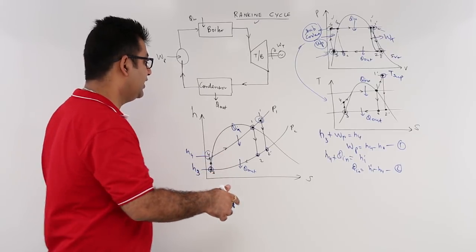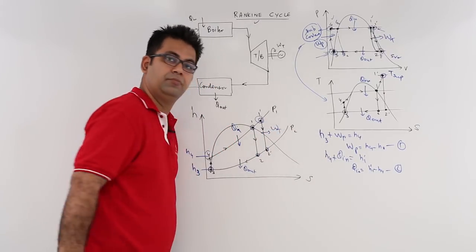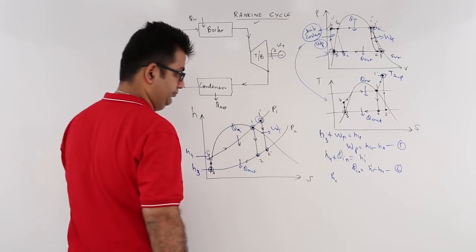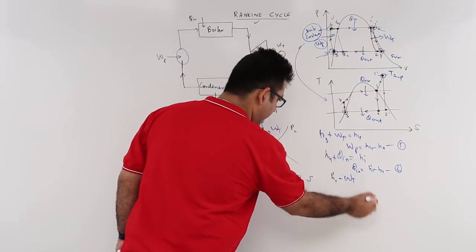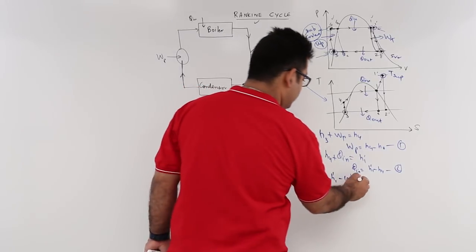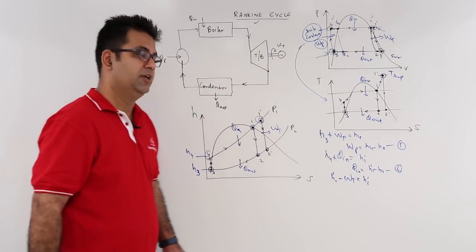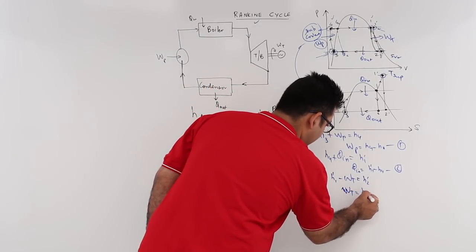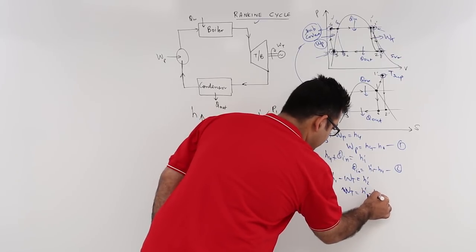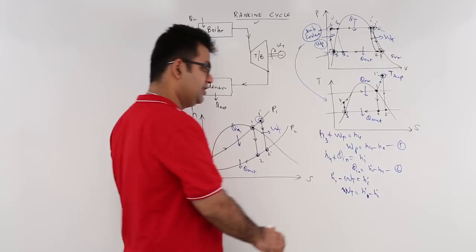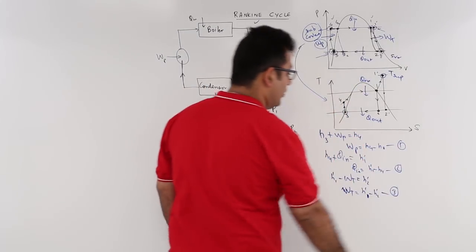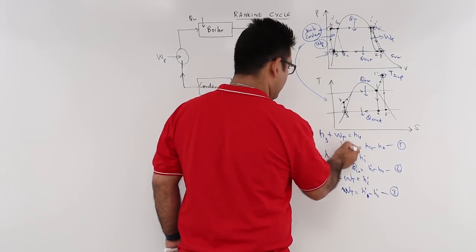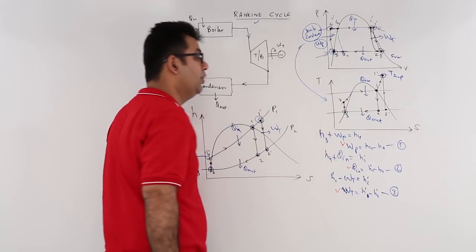Now let us go for 1 dash to 2 dash, that is the turbine work output. And that would be, you are at 1 dash, you take out some work output from it, and then your energy level drops to H2 dash. So to find out WT, you have to subtract H2 dash from 1 dash. So this is equation 3. So now we have found out WP, we have found out WT, we have found out W or Q in.